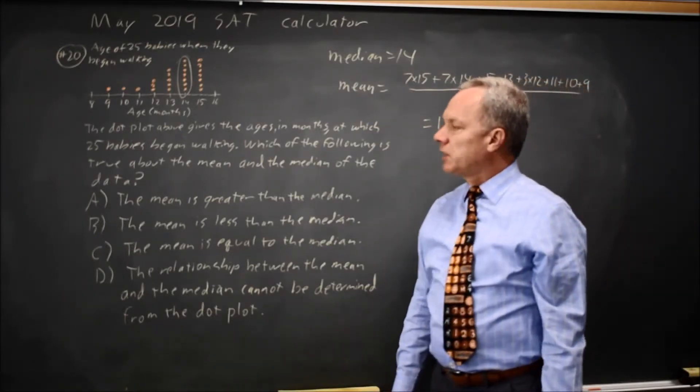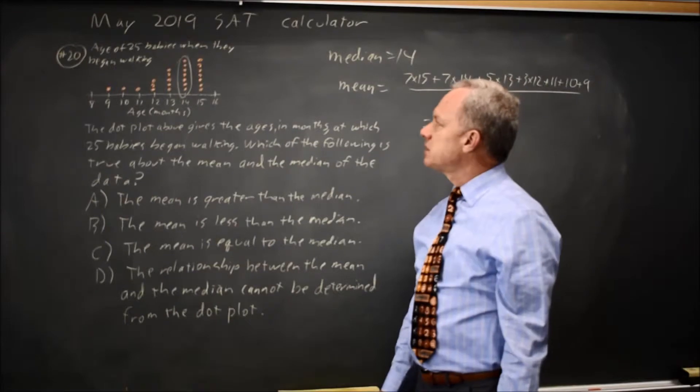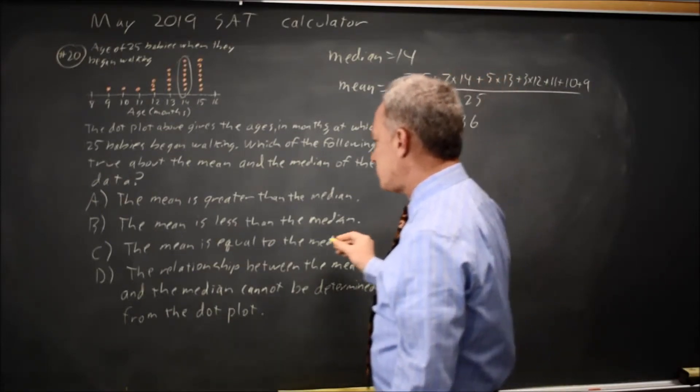3, 6. And we observe that the mean is less than the median because the median was 14. So that is choice B.